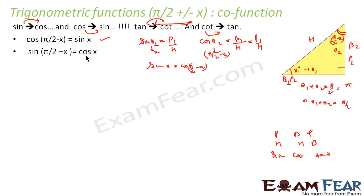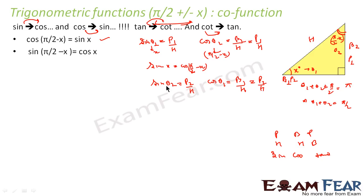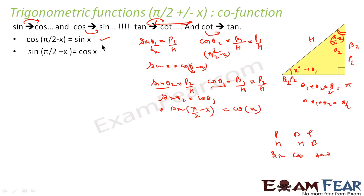Similarly, sin(π/2 minus x) equals cos(x) — we can prove this also. sin(π/2 minus x) is sin(theta 2), which equals p2/h. And cos(x) is cos(theta 1), which equals b1/h. We see that b1 and p2 are the same, so both equal p2/h. Therefore sin(theta 2) equals cos(theta 1), meaning sin(π/2 minus x) equals cos(x). So we have proved this also.